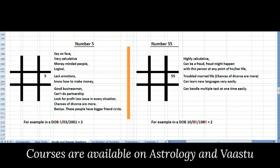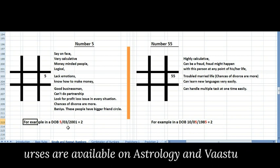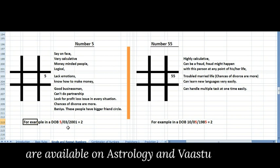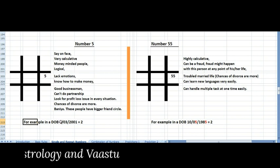How do we see it in the date of birth? Here you may see 5th of March 2001 - the destiny becomes 2. In this date of birth, 5 is coming only once. So this is an example of number 5.